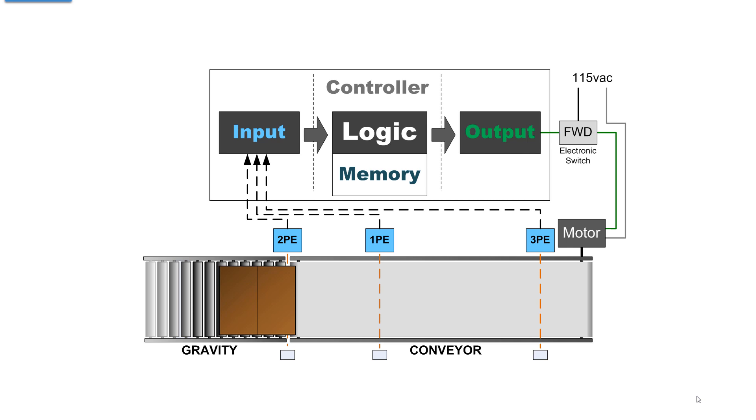The carton moves onto the conveyor until it blocks 1PE, photo eye 1, and then it stops.